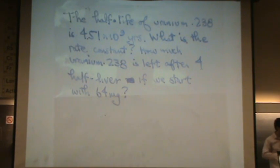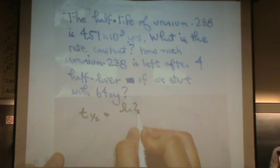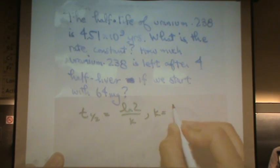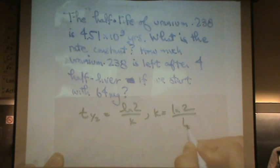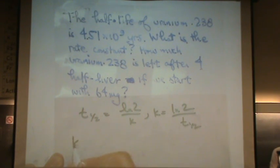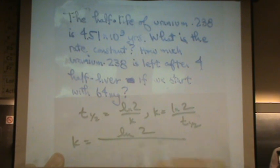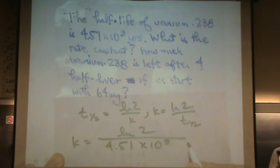So let me write down the half-life formula for first-order. t to the 1 half, and it's not raised to the 1 half power, it's just a symbol, equals natural log of 2 over the rate constant. Or the rate constant equals natural log of 2 over the half-life. So k in this case is just the natural log of 2 over 4.51 times 10 to the 9 years.